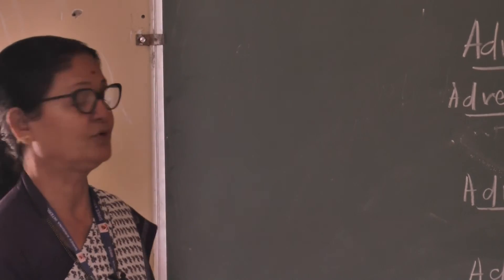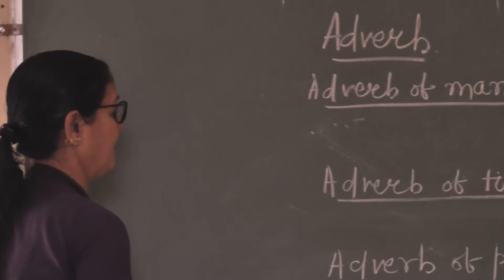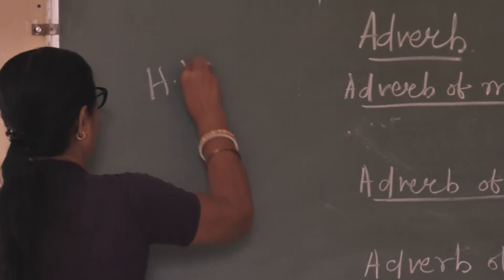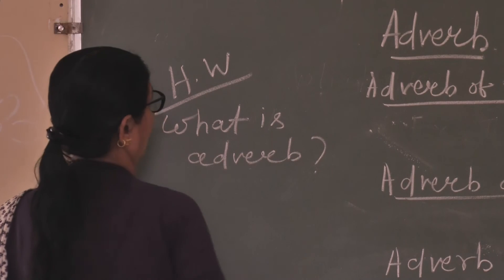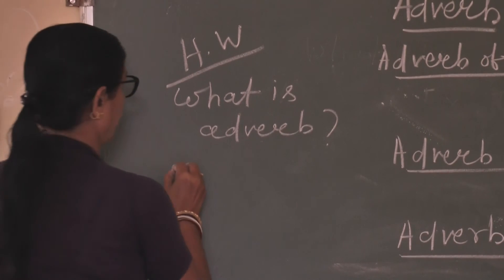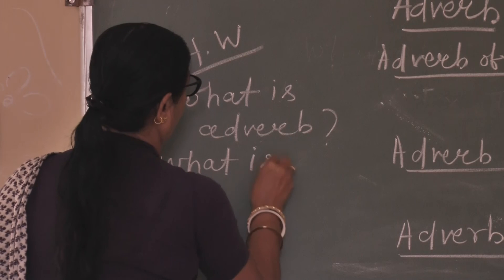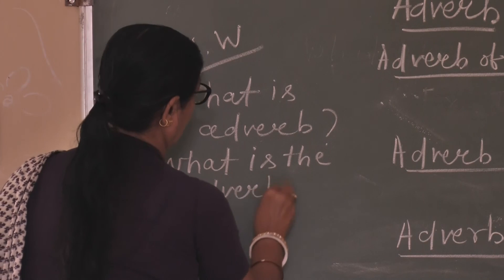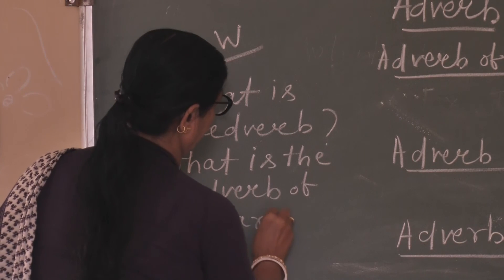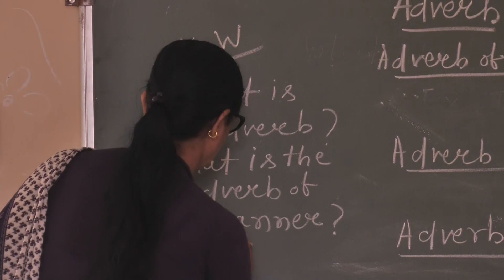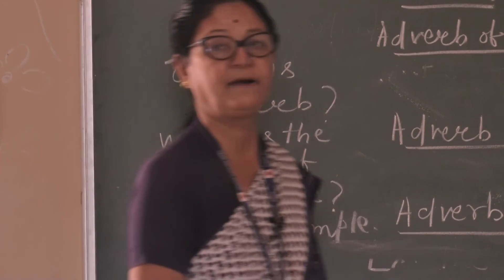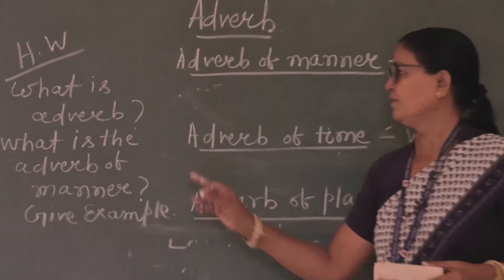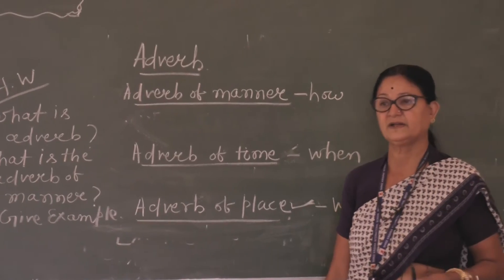Actually, I have not covered all the adverbs today. In the next class we can discuss the rest. But before that, you should know these three: adverb of manner, adverb of time, and adverb of place. Your homework is: write down what is adverb — the meaning of adverb — then what is adverb of manner with example, and adverb of time with example. This much for today. In the next class we will go through other adverbs. Thank you, children.